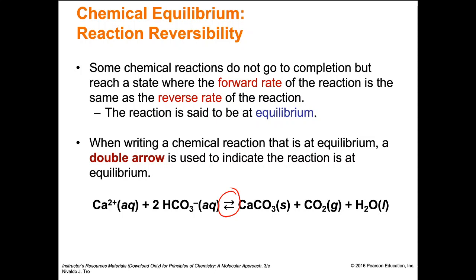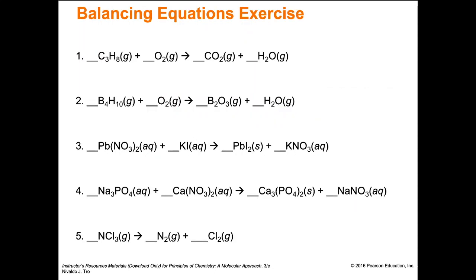Some chemical reactions don't go to completion but reach equilibrium, where the forward rate equals the reverse rate. Equilibriums can lie more toward the product side or reactant side depending on the system and conditions. When writing a reaction at equilibrium, we use a double arrow, meaning the reaction moves in both directions. We'll talk about Le Chatelier's principle later.